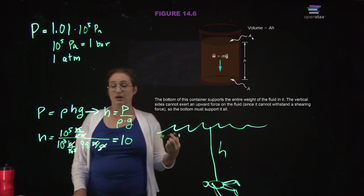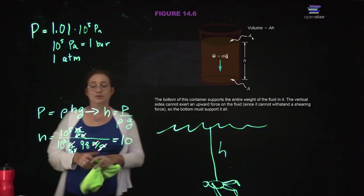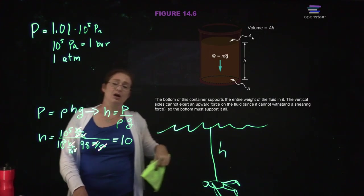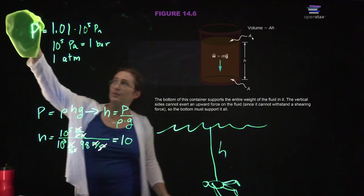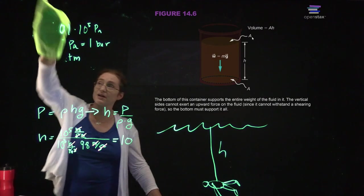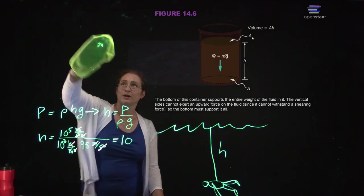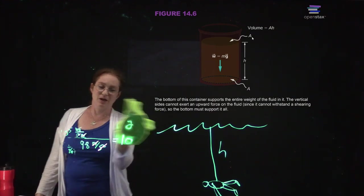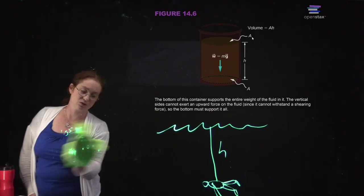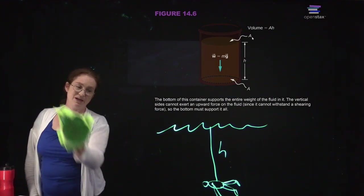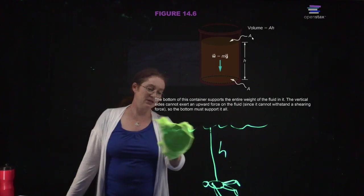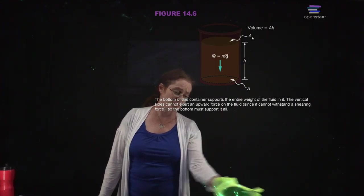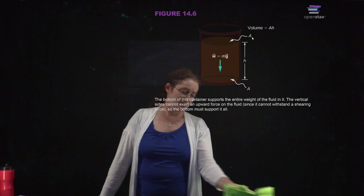That's actually not that deep. As you go down in the ocean, you pretty quickly reach several atmospheres of pressure. You have to worry about this if you're scuba diving because your body does not respond to those pressures very well. If you go up or down too quickly, you can get something called the bends, which is when your body doesn't have time to respond to the changes in pressure fast enough, and you can actually get gas bubbles in your bloodstream because of the change in pressure.